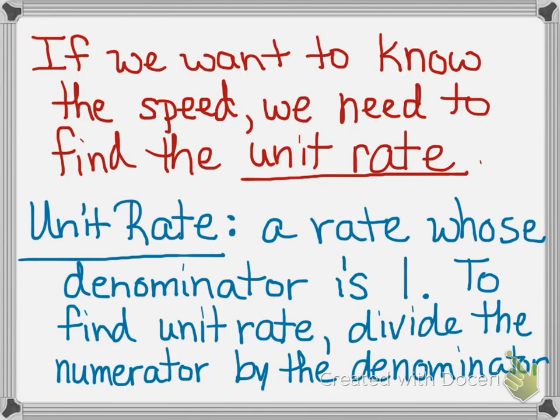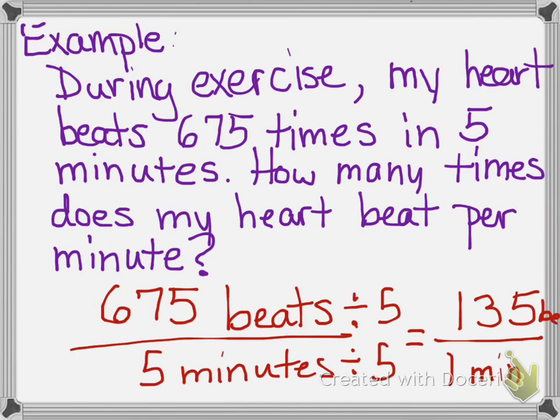Let's look at another example. During exercise, my heart beats at a rate of 675 times in five minutes. How many times does my heart beat per minute? I need to find the unit rate. I'll take my 675 beats and put that over five minutes, then divide by my bottom number — divide by five. That gives me a unit rate of 135 beats for every one minute. So that's another example of how to find the unit rate.